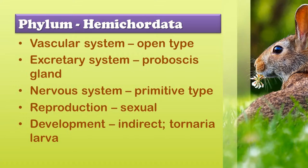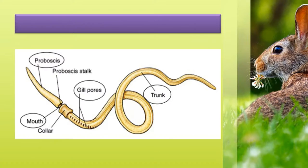Sexes are separate and they exhibit sexual mode of reproduction. Fertilization is external. Development is indirect with a free-swimming tornaria larva. The example for Hemichordata is Balanoglossus. Other examples are Saccoglossus.